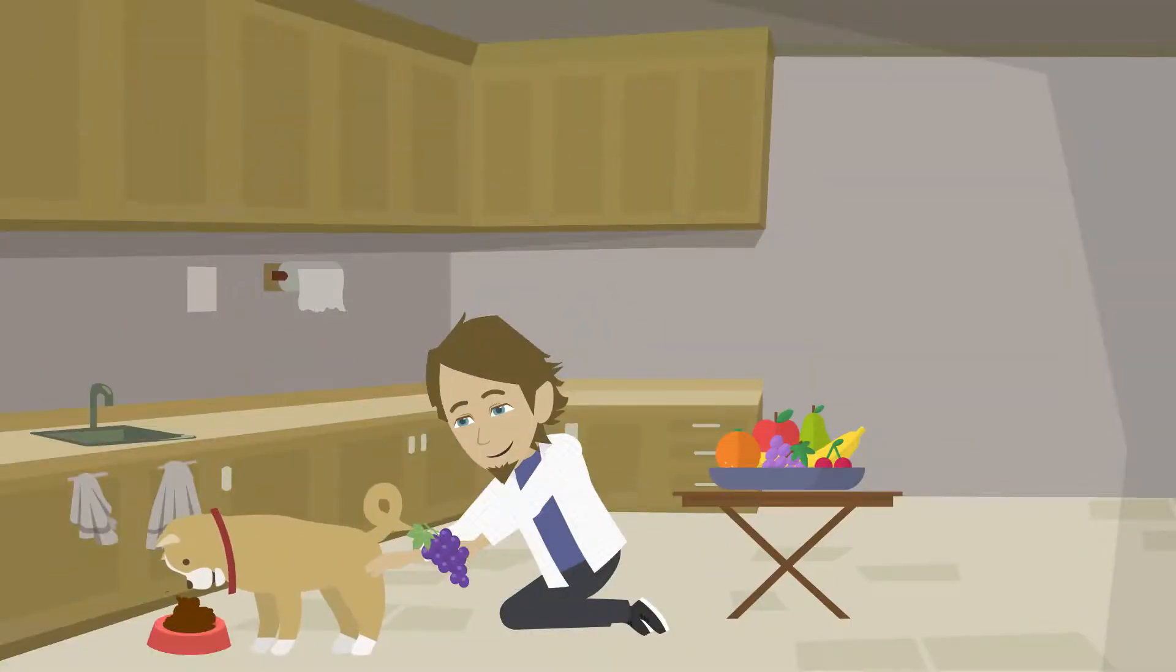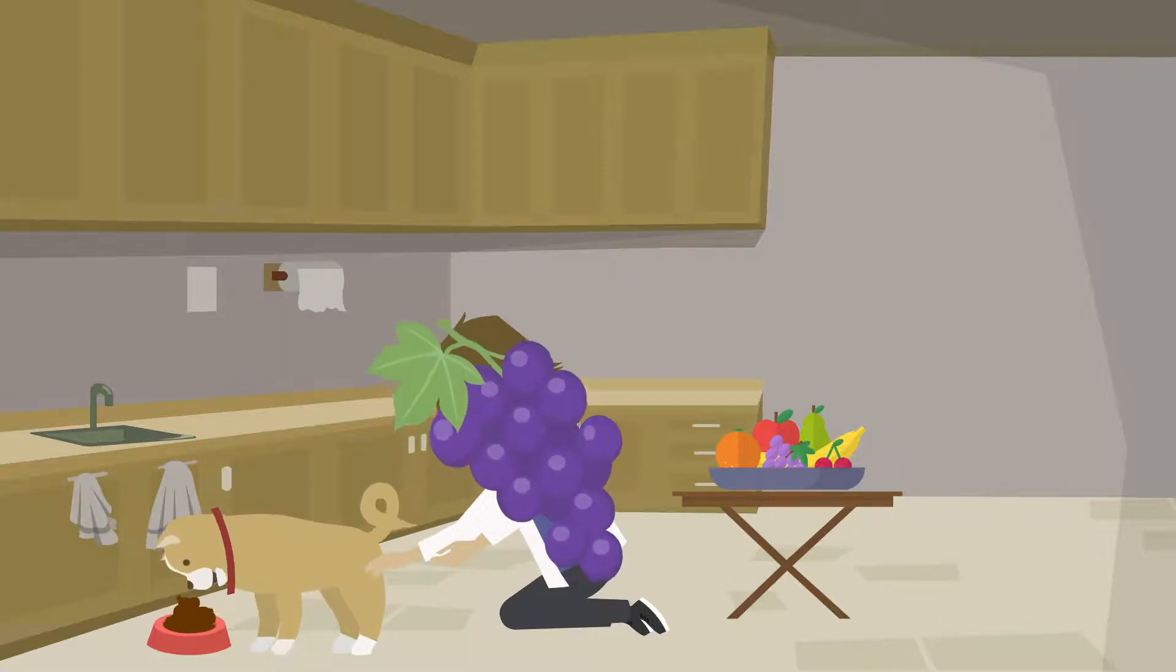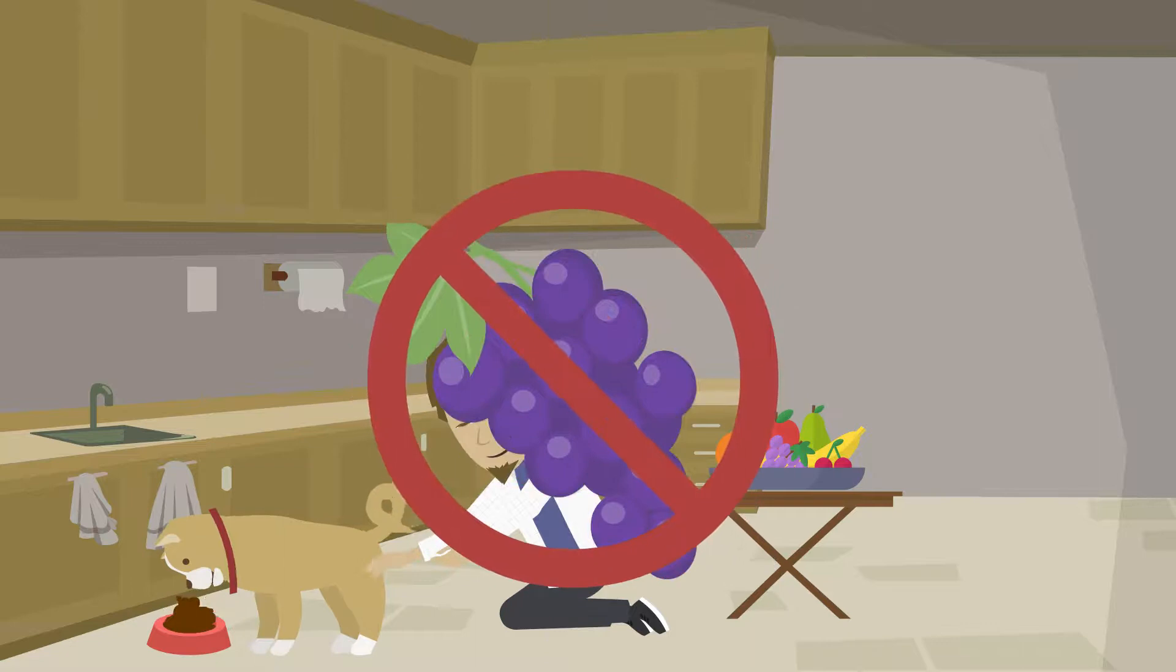Were you about to feed your dog a grape? What happens if your dog eats a grape accidentally? Grapes and raisins are toxic to dogs and can lead to kidney failure, so in short, do not feed grapes to your dog.